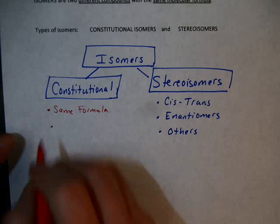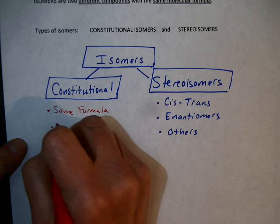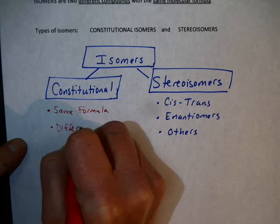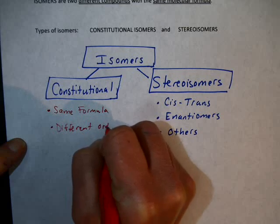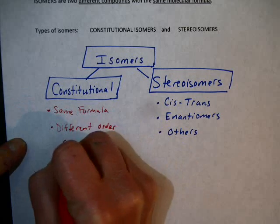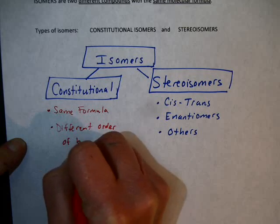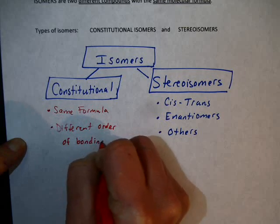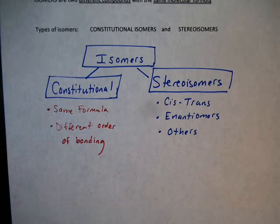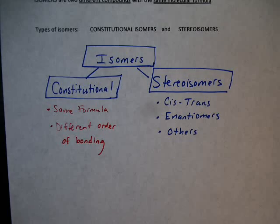So we'll say it like this: same formula, different order of bonding. What does that mean? Let's look at a few examples.